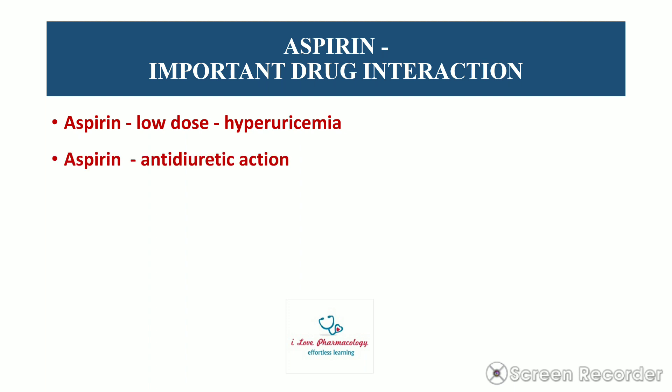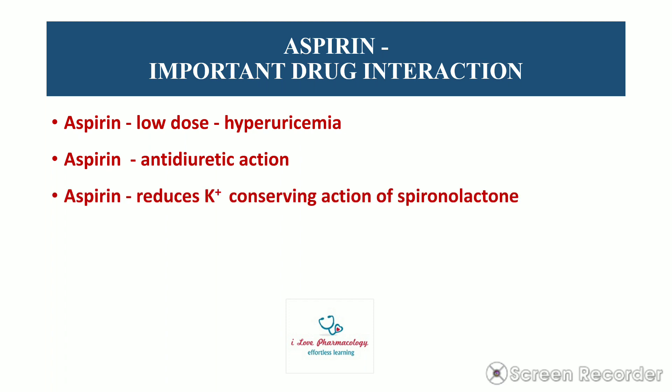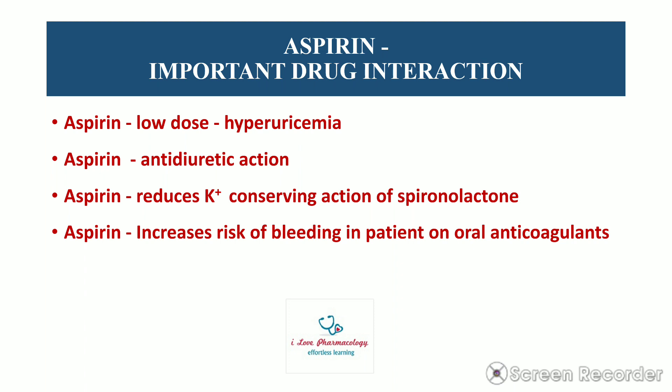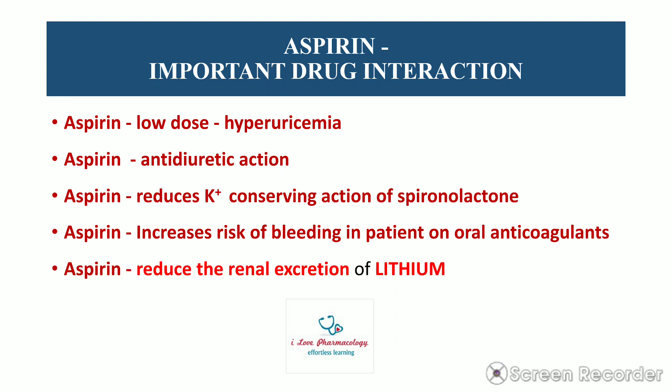To summarize: Low-dose aspirin causes hyperuricemia, increasing the risk of recurrent gout attacks. Aspirin blunts the diuretic action of furosemide and also blunts the antihypertensive action of diuretics. Aspirin reduces the potassium-conserving action of spironolactone by competing with canrenone. Aspirin increases the risk of bleeding in patients on oral anticoagulants by displacing warfarin from plasma protein binding sites, increasing warfarin concentration. Finally, aspirin reduces the renal excretion of lithium, leading to lithium toxicity.